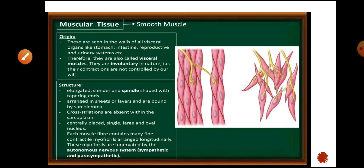The contraction of striated muscles is under our control. If we want to contract the muscles of our hands, we can do so. This is why skeletal muscles are also known as voluntary muscles — because their contraction is under our will.